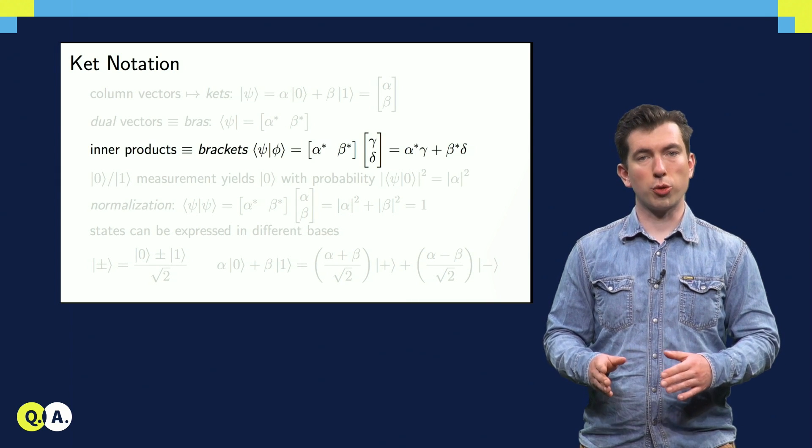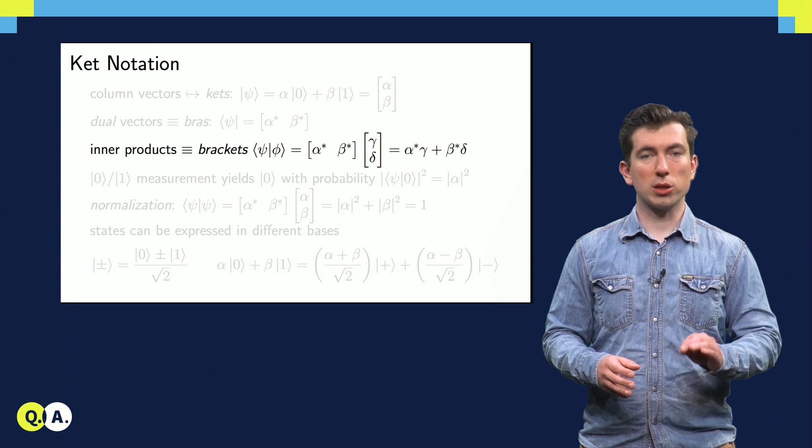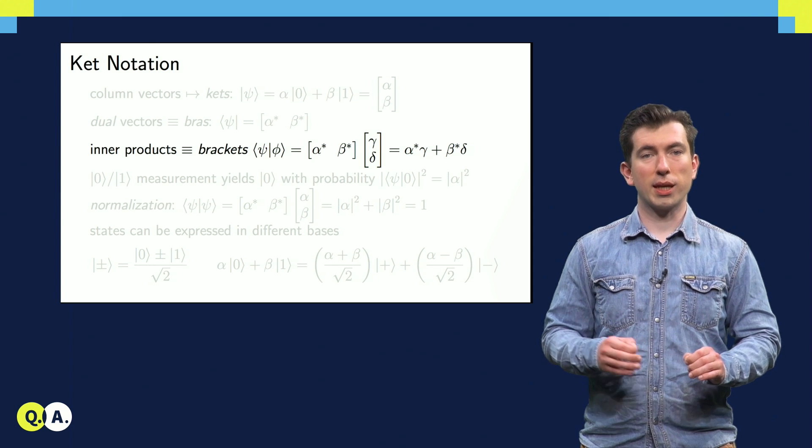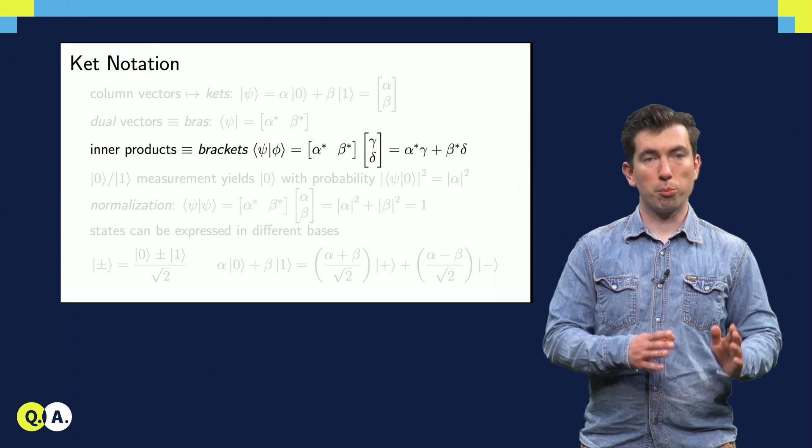This is important for calculating inner products, which we always do by multiplying the bra for one state by the ket of the other, forming a bra-ket.